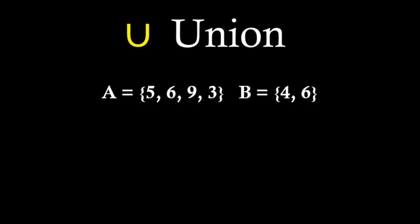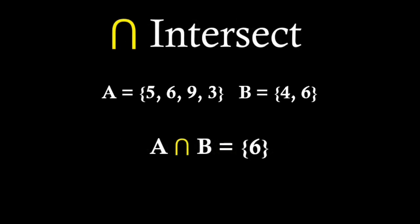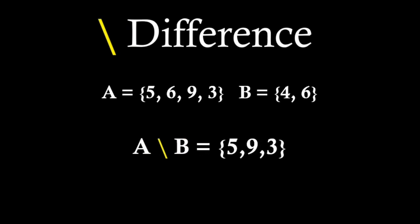Union represents an operation of combining two sets, which results in another set containing all unique elements from both sets. Intersection denotes another operation of combining two sets. The result of intersection is a set which contains elements that are common in both sets. Set difference is denoted by a backslash. The result of this operation is a set which contains all elements of the first set that are not in the second set.